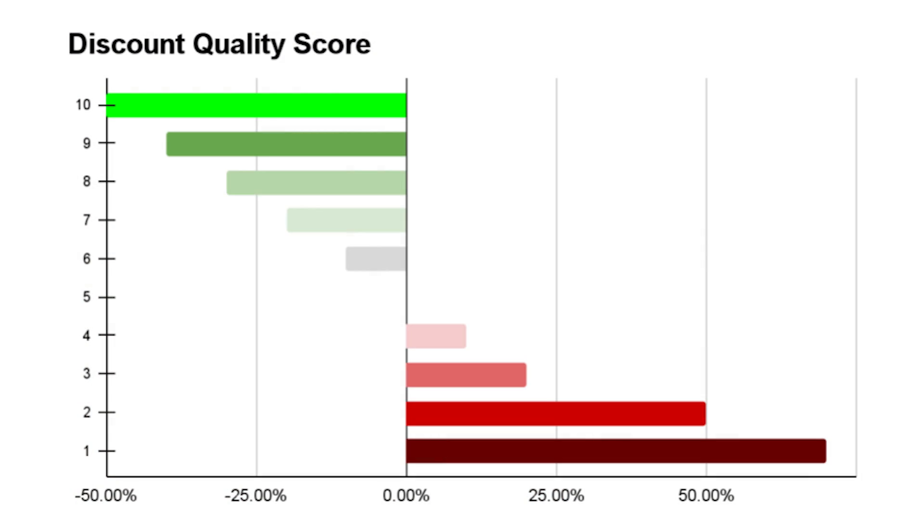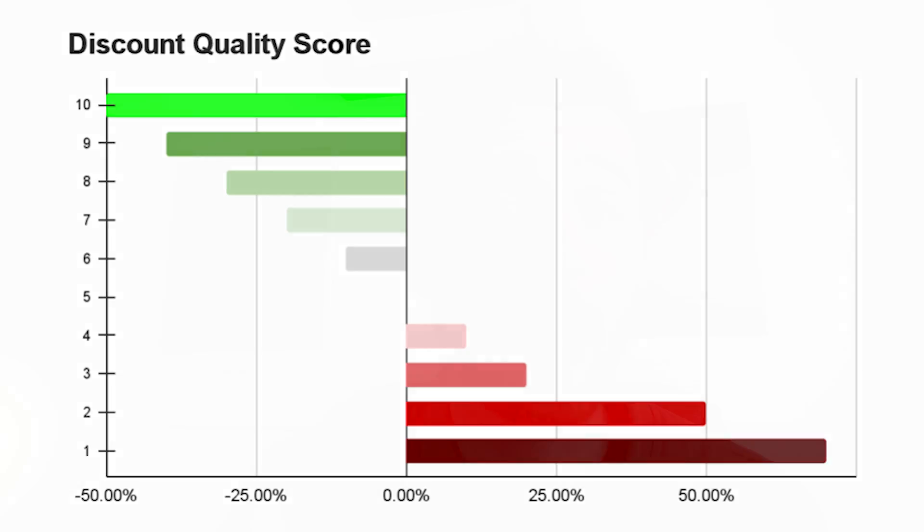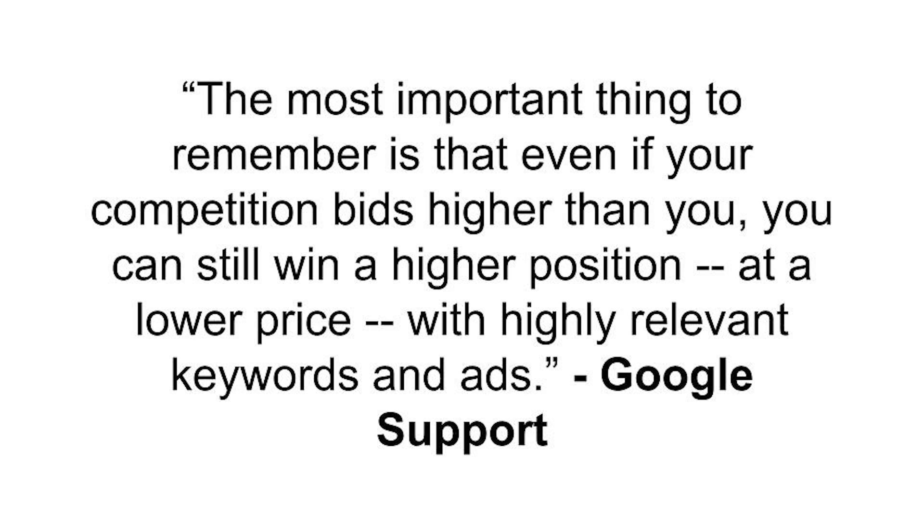Quality score is essentially how much Google likes your advertising — does it like your landing page, your actual ad, the keywords you're targeting. It's ranked on a scale from one to ten. Five is average — it won't dock or give you any points. Above five, Google gives you a discount. Below five, it costs you more money. However, even a small budget with an amazing quality score — a nine or ten out of ten — can display above the competition, which is great for small businesses willing to be relevant and targeted.